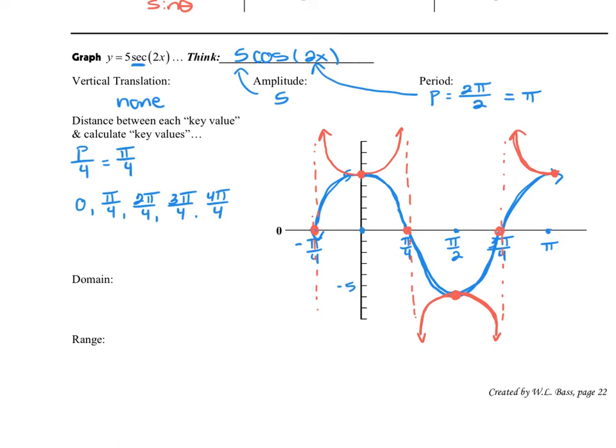Now, when we write its domain, now that we have these asymptotes, we need to consider that in our domain. So our domain is no longer going to be a negative infinity to positive infinity. It'll have these asymptotes. So x such that x is not equal.